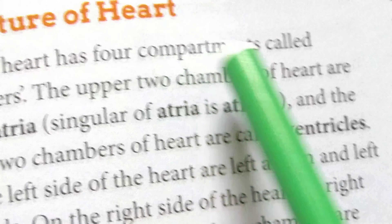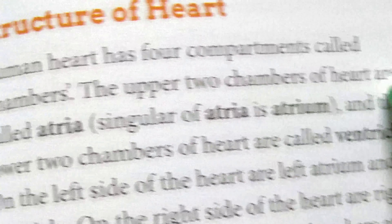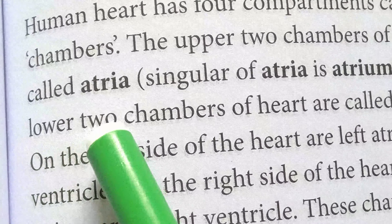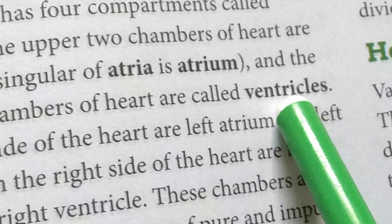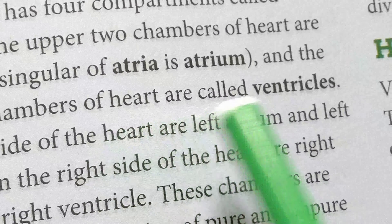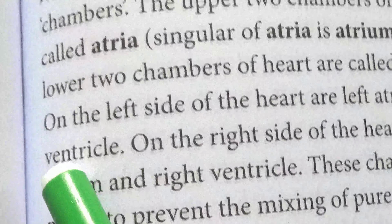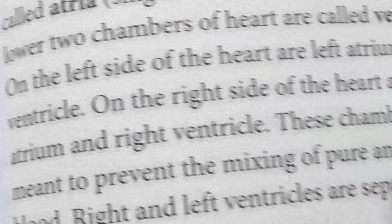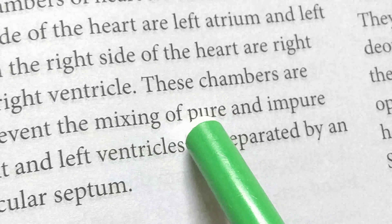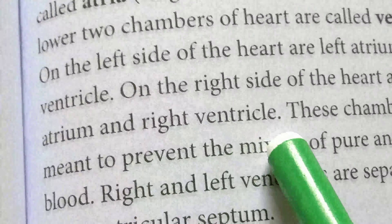The human heart has four compartments called chambers. The upper two chambers of the heart are called atria — singular is atrium. The two lower chambers of the heart are called ventricles. On the left side are the left atrium and left ventricle; on the right side are the right atrium and right ventricle. These chambers prevent the mixing of pure and impure blood.